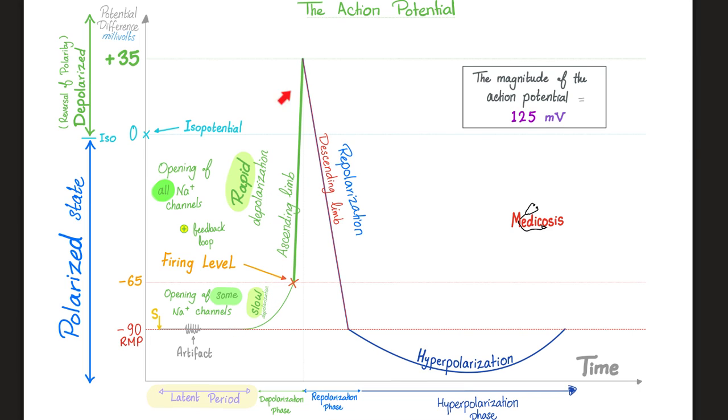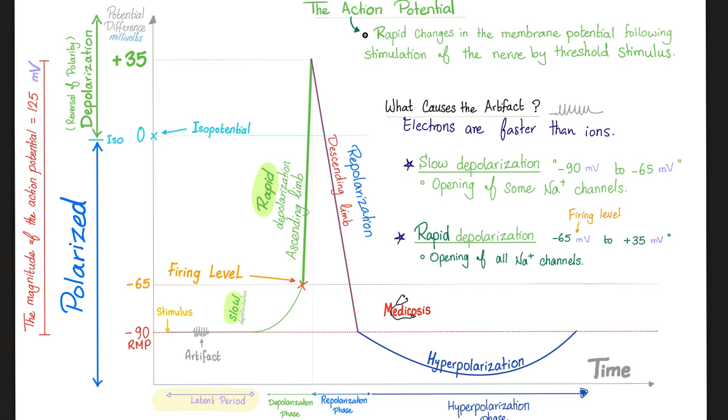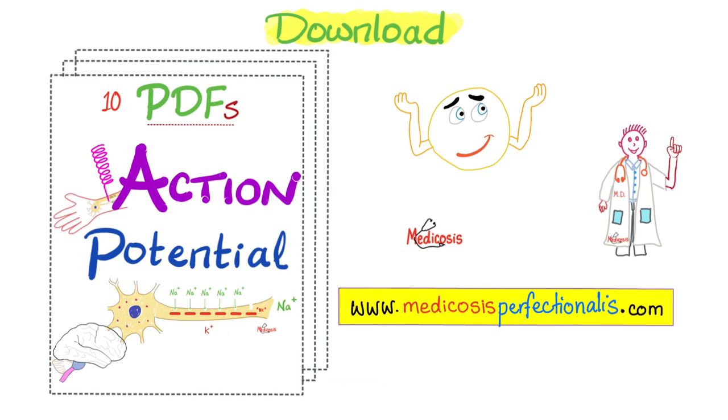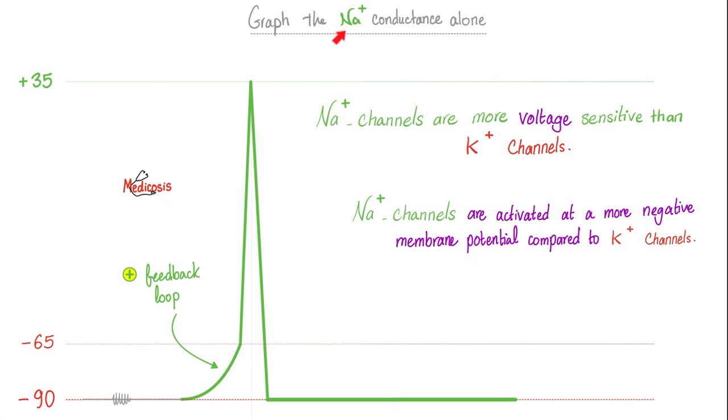We have slow depolarization followed by rapid depolarization. Here, some sodium channels are open. But here, all of the sodium channels are open. What's the magnitude of the entire action potential? Okay, from negative 90 to zero, that's 90. And from zero to 35, that's 35. 90 plus 35 is 125 millivolts. The stimulus was given here. Why do we have an artifact here? Because electrons are faster than ions. The electricity from the stimulus is faster than the electricity in your nerve. Between giving the stimulus and the actual firing of the depolarization, you have this period that's known as the latent period. Oh, by the way, if you want to download these notes, I have them available on my website and PDFs. Just go to medicosisperfectionalis.com.